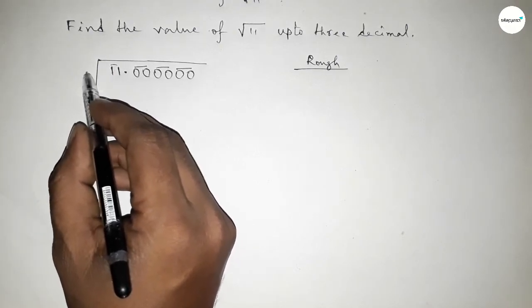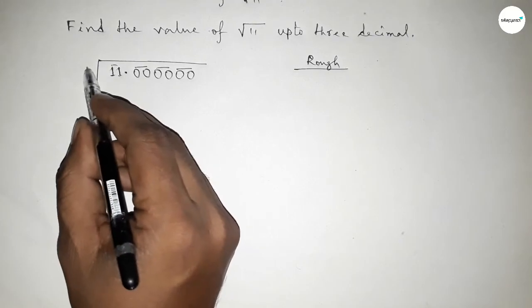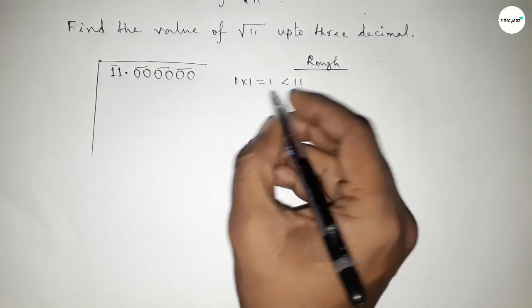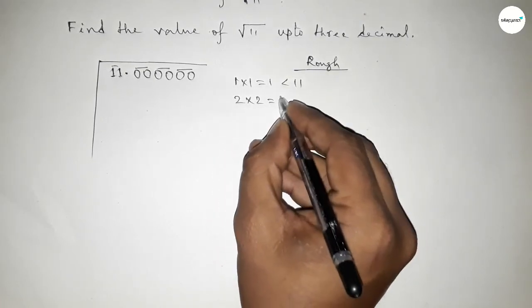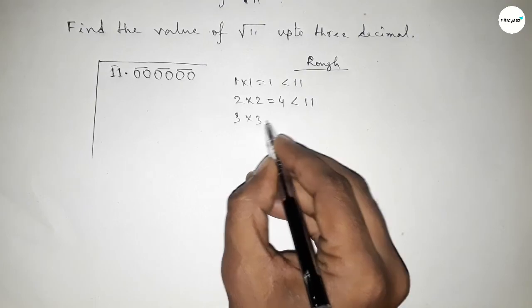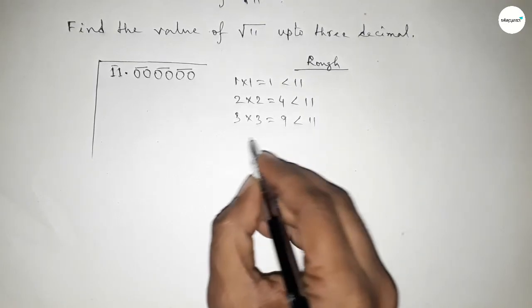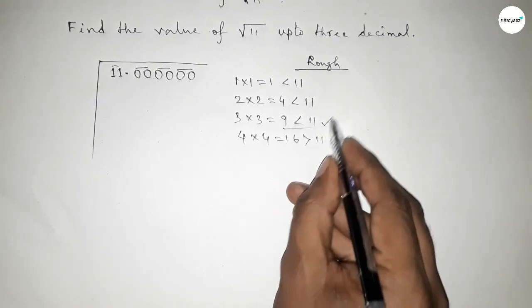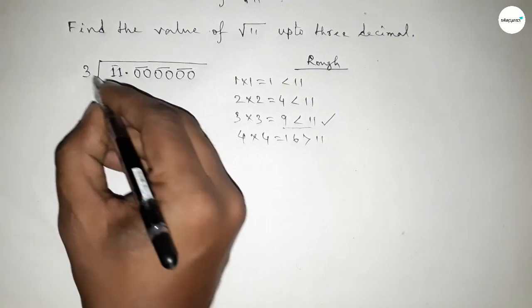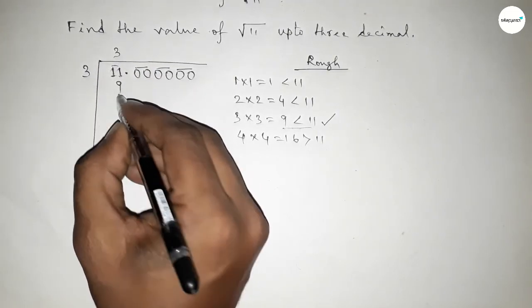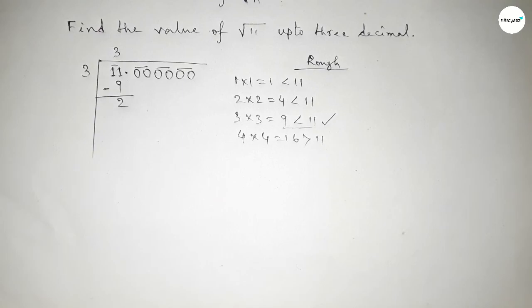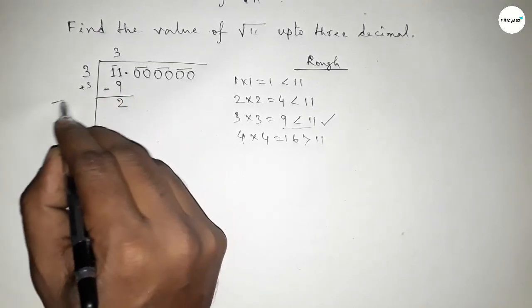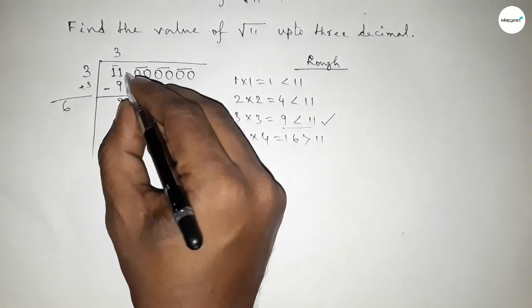We need to find which number multiplied by itself is less than 11. If we put 1, multiplying gives 1 — less than 11. If we put 3, multiplying gives 9 — less than 11. If we put 4, that gives 16, which is greater than 11. So we put 3, which is closest to 11. Subtracting, and since the last digit is 3, we add 3: 3 plus 3 equals 6.